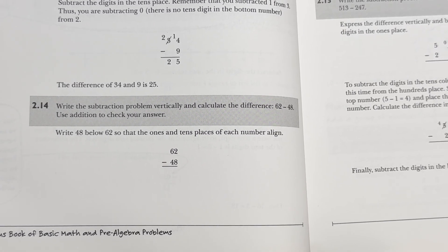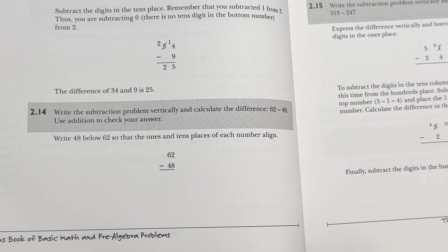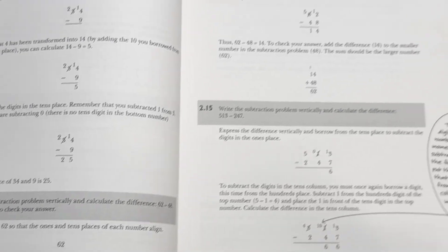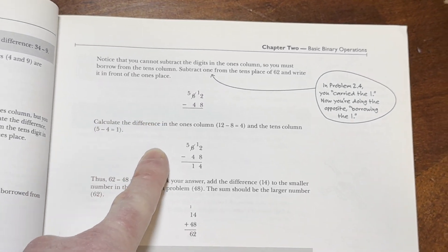Write the subtraction problem vertically and then calculate the difference: 62 minus 48. Use addition to check your answer, and it goes through the work.